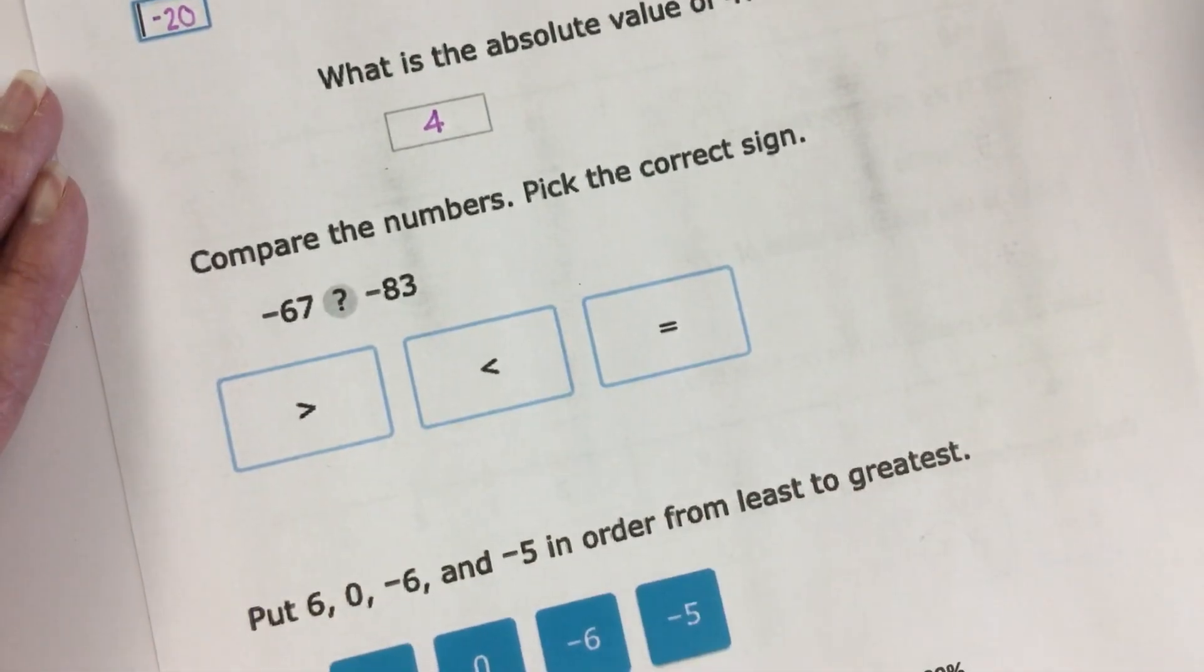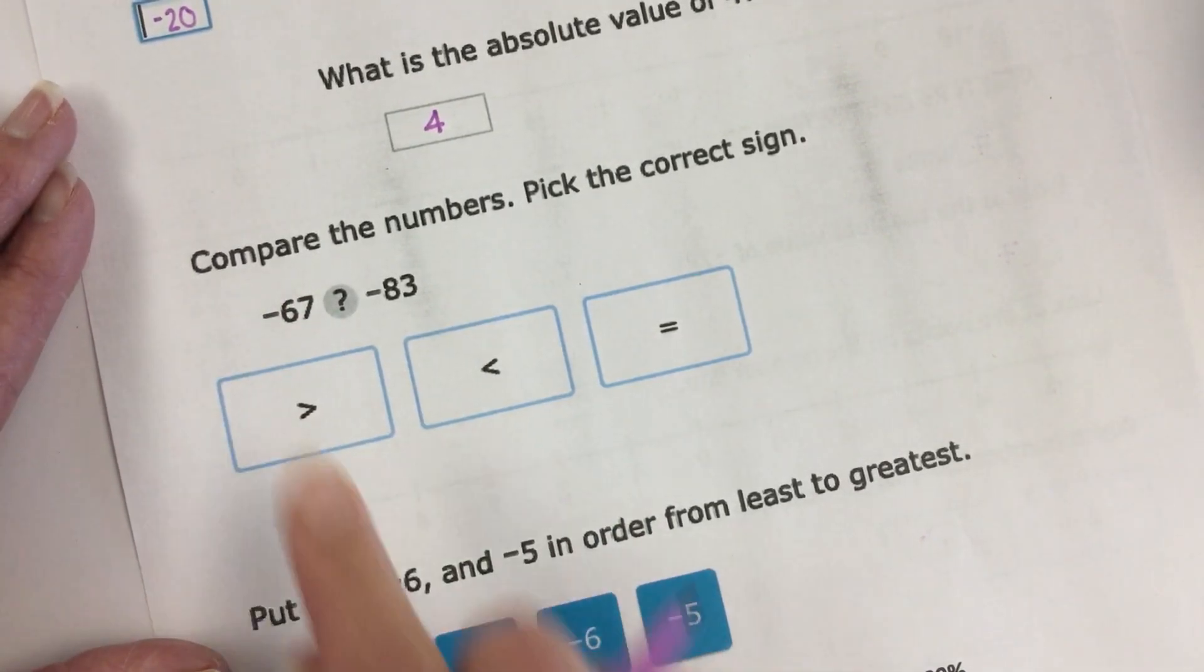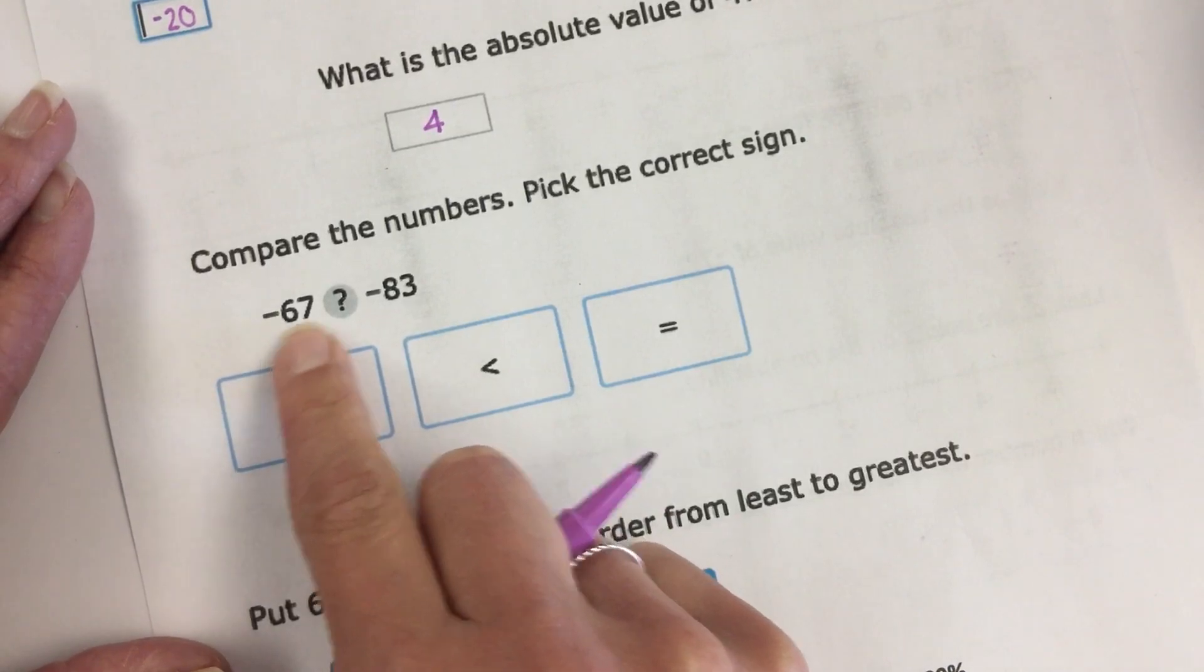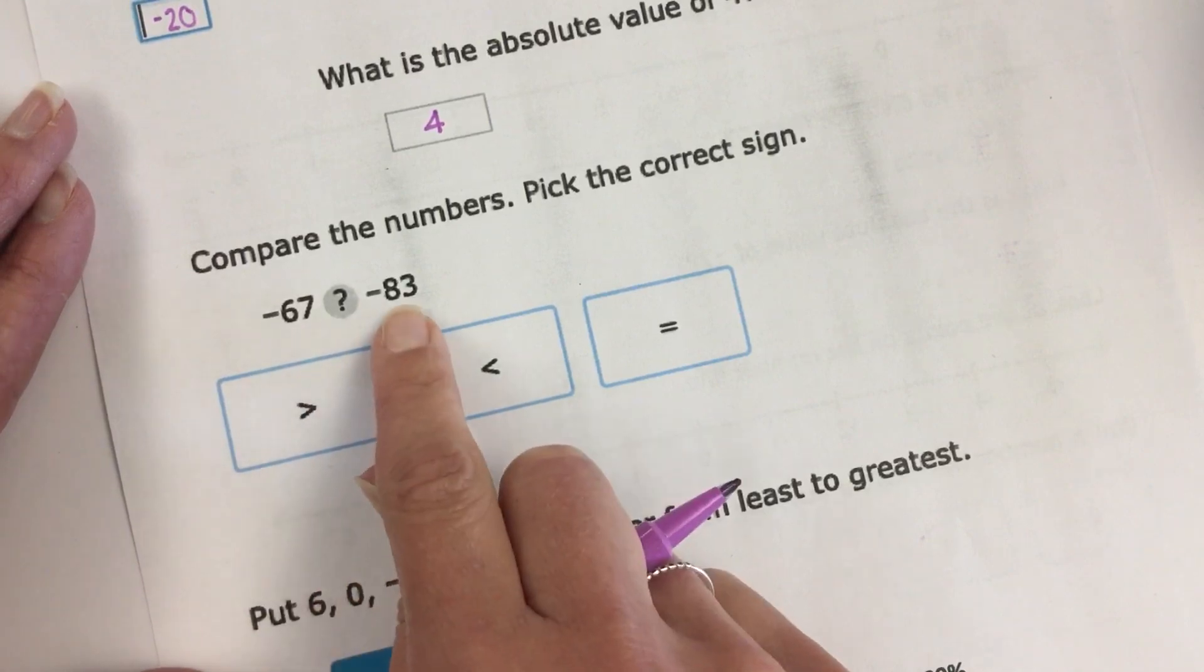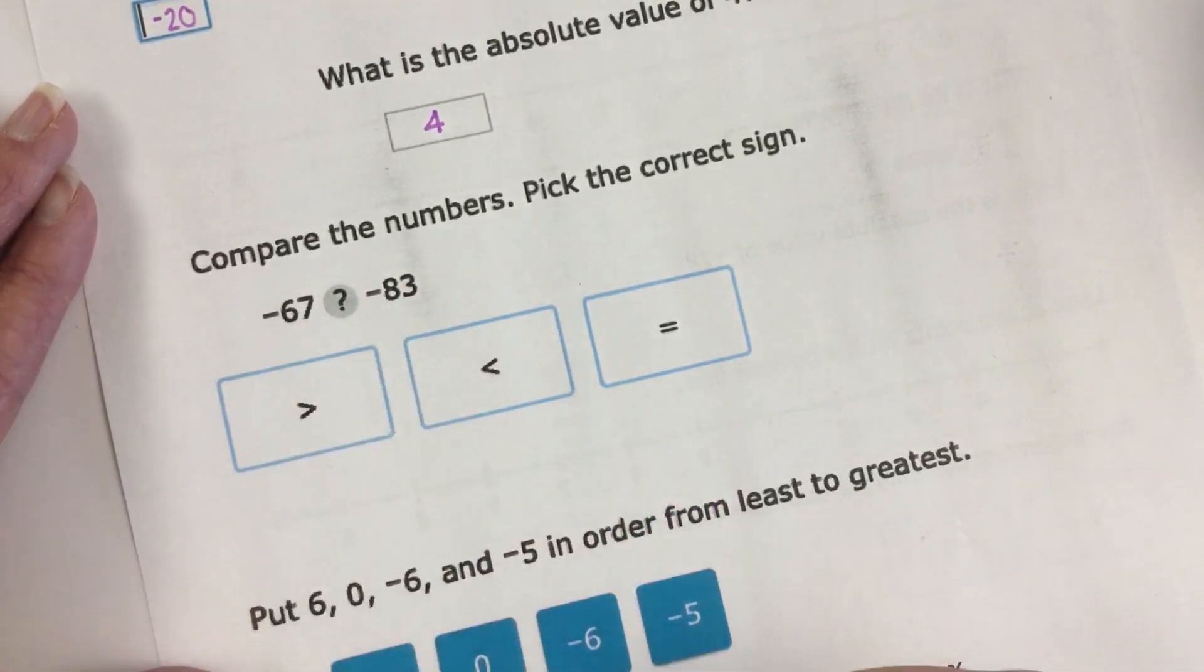The other types of problems you might see are ones that they want you to compare. So for example, who is greater? Negative 67 or negative 83? Well it might seem like 83 is bigger, but because it's negative it actually is smaller.